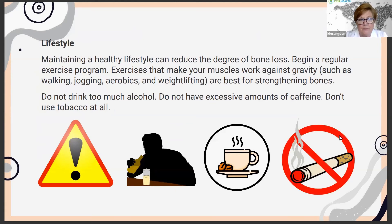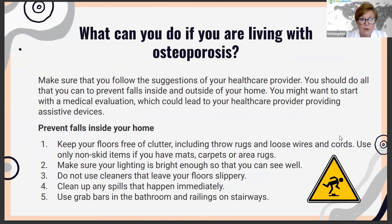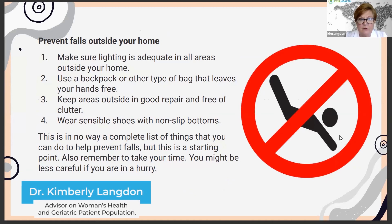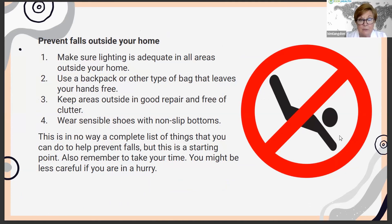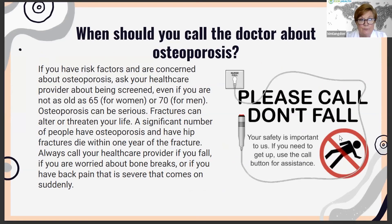To reduce your risk of osteoporosis, do weight-bearing exercise such as jogging, walking, and weightlifting, don't drink too much alcohol, and please stop all forms of tobacco. The best thing you can do is not fall. In your home, keep floors free of clutter — no throw rugs, loose wires, or cords. Make sure there is good lighting, avoid slippery floors, don't wax floors, clean up spills immediately, and have grab bars in the bathroom since the floor gets wet. Outside, make sure you have good lighting, and use a backpack rather than a purse to keep your hands free in case you trip or fall. Wear sensible shoes with non-slip bottoms.